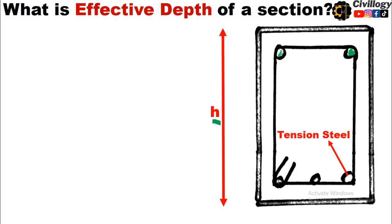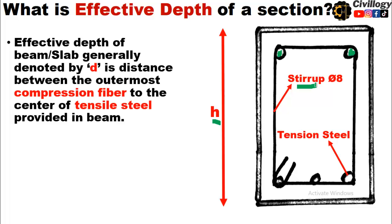These steels combined can be called as main bars or main reinforcement. There are also stirrups to hold the main reinforcement in its position, and they also act as shear reinforcement. As we all know, the beam experiences compression at the top, so this is the compression zone of the beam.